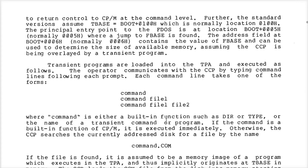We don't really have to worry about what it means to run a program that has files as arguments, like the copy example program they give you in this manual. We're going to just print stuff on the console and read the keyboard, so we're not going to have arguments or command parameters and stuff like that.